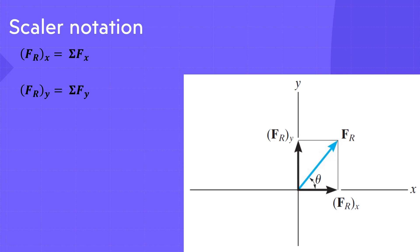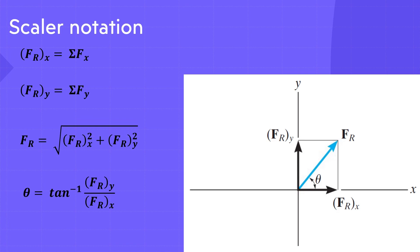From this sketch, the magnitude of FR is then found from the Pythagorean theorem: FR equals the square root of FRx squared plus FRy squared. Also, the angle θ, which specifies the direction of the resultant force, is determined from trigonometry: θ equals tan inverse of FRy divided by FRx.